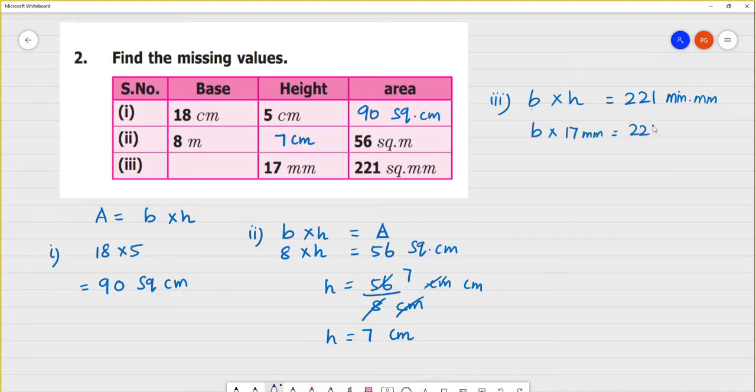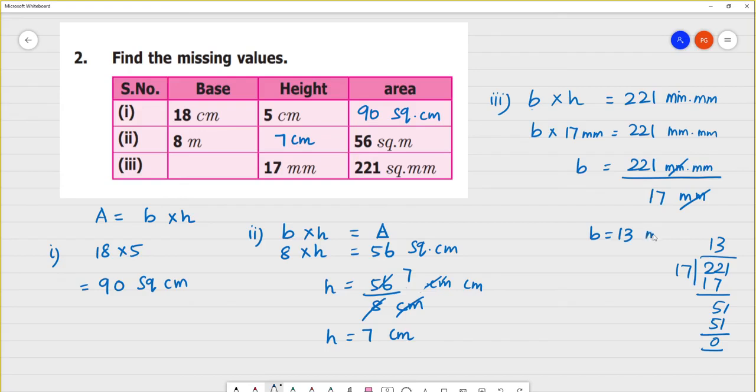So here we are going to be 21 square centimeter, 22 square centimeter. The base is equal to 30 millimeter. This is 30 mm, 30 mm.